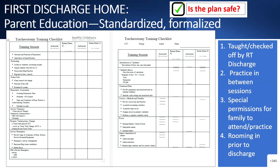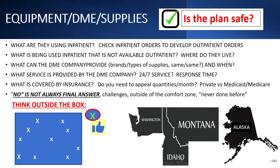Parents sometimes feel nervous about being judged or tested. We try to prepare them with anticipatory guidance that it's not a test — it's not for us, it's for them. Equipment, DME, and supplies: what they're using inpatient is what we try to get outpatient, and that's where we start. We'll check the inpatient orders to develop the outpatient orders. There are lots of hospital things that aren't available outpatient.